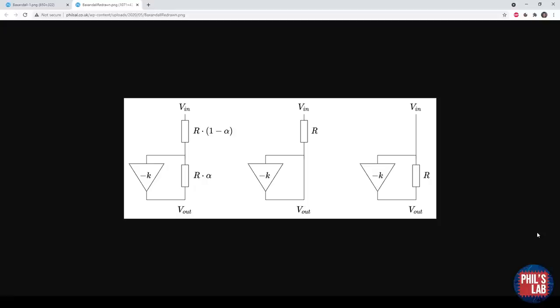I have omitted the unity gain buffer and assumed it is part of the inverting amplifier, as its only function is to provide a high input impedance. The far left diagram shows the potentiometer split into two. It is simply a potential divider with two varying resistors with the potentiometer setting indicated as alpha, which can vary from zero to one. The inverting amplifier is now in parallel with the lower resistor.